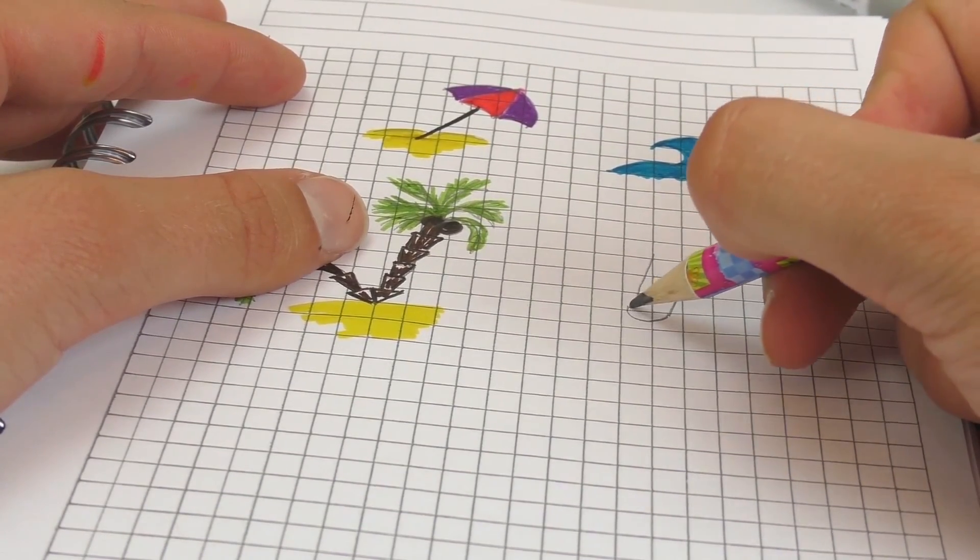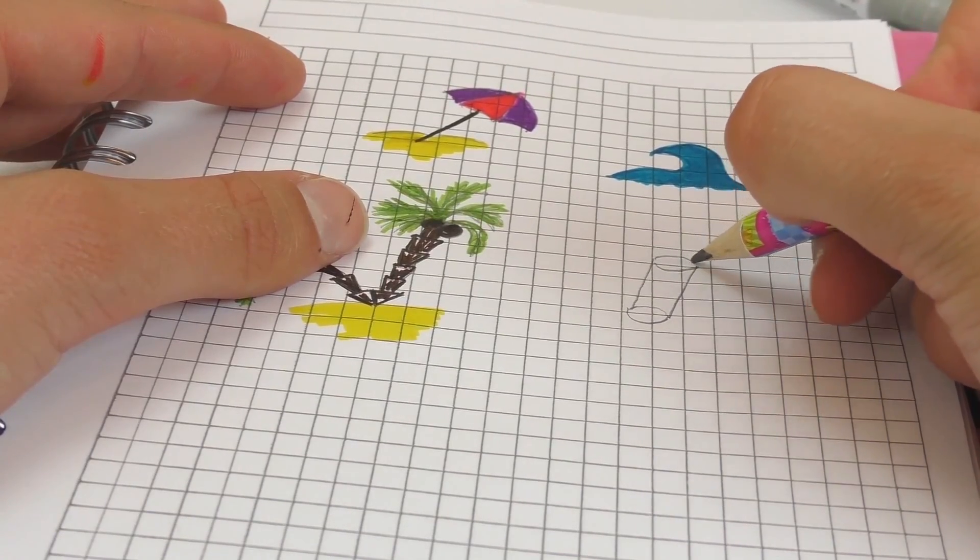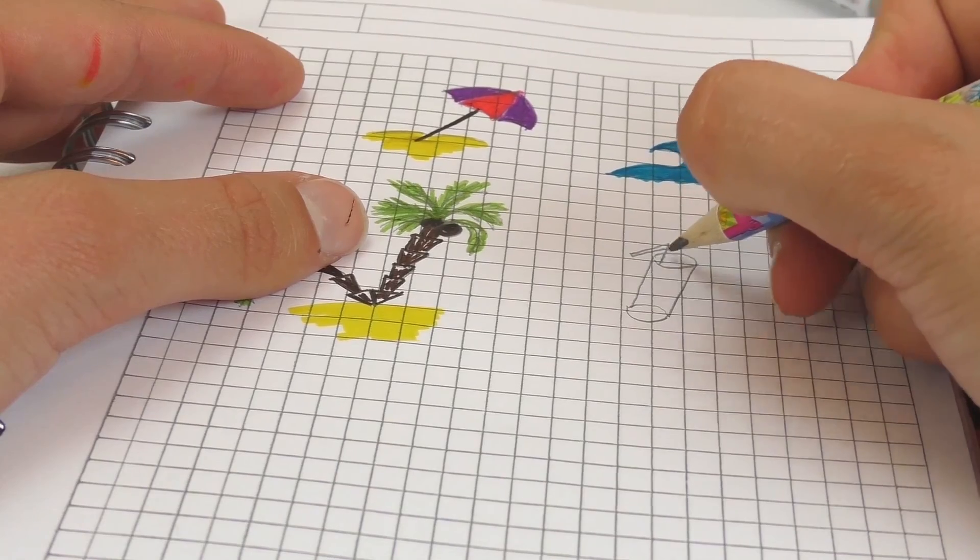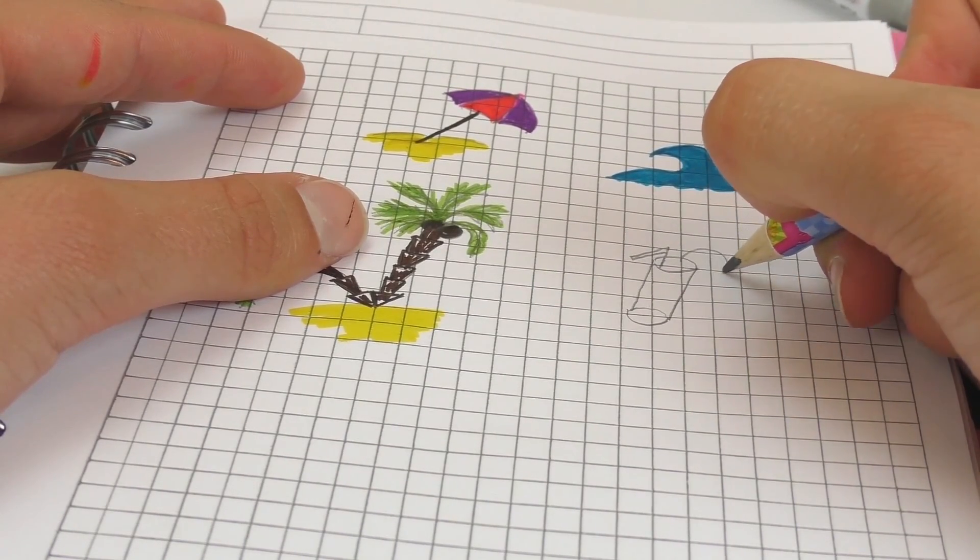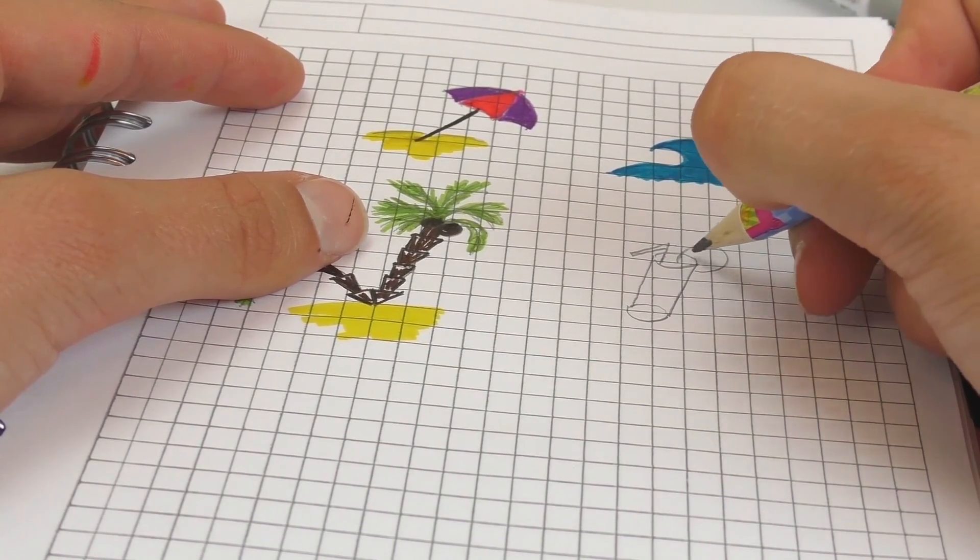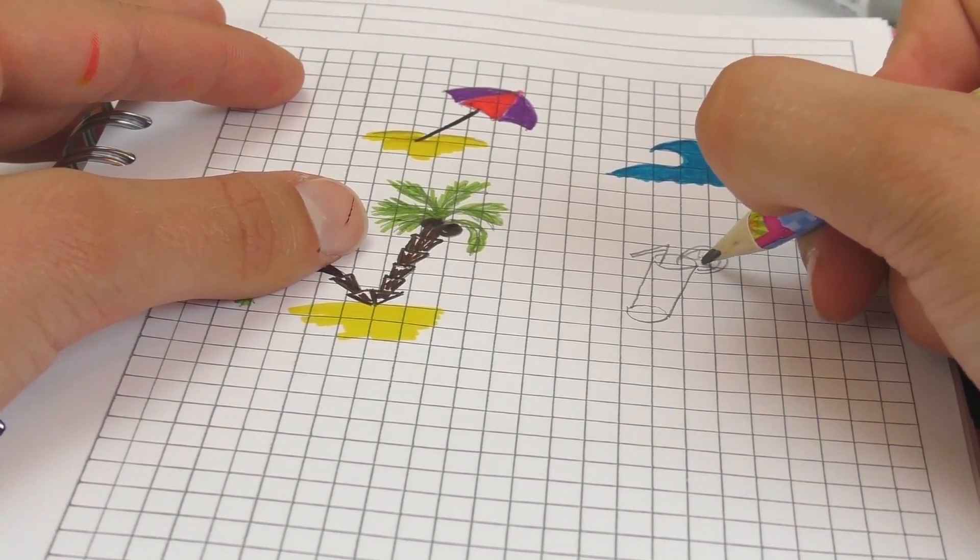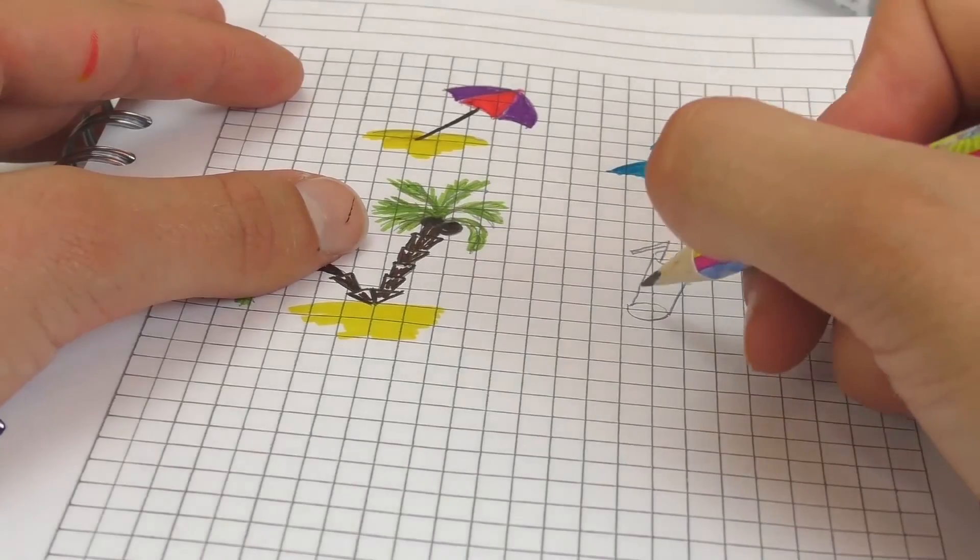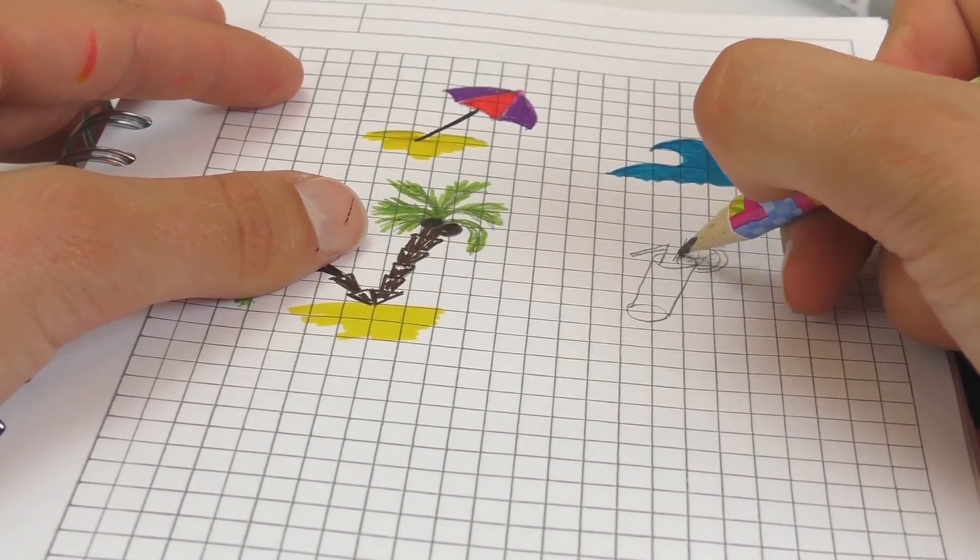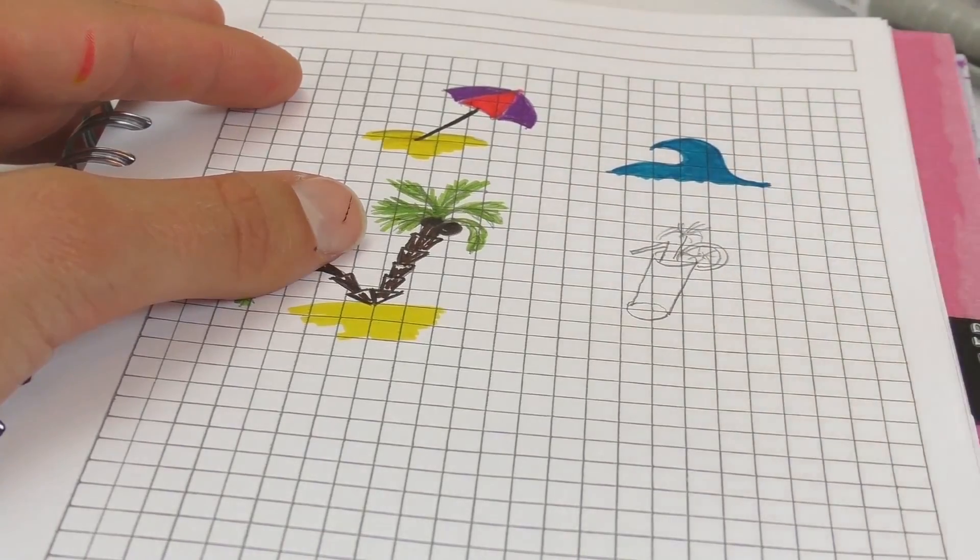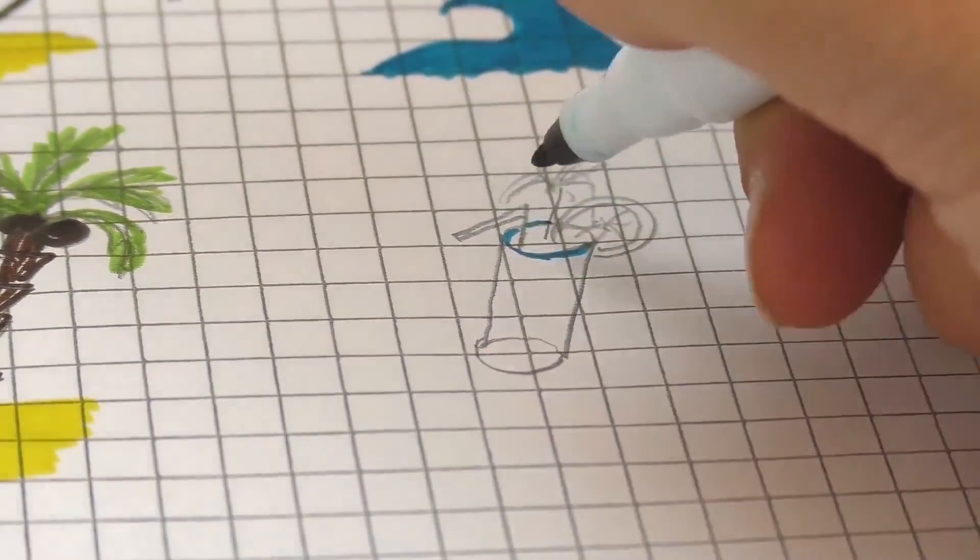Right, our next drawing will be a cocktail. There's always a cocktail needed going to the beach, or a drink. Piece of lemon, maybe this umbrella on there or like a little flag they sometimes have.